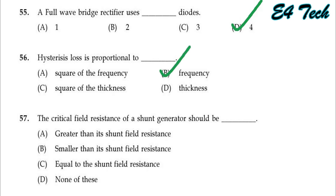The critical field resistance of a shunt generator should be greater than the shunt field resistance. Critical field resistance should be greater than the shunt field resistance. Option A.